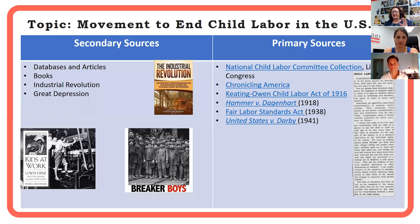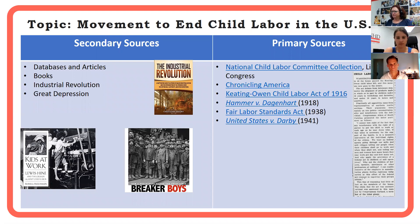I usually start with secondary sources — I might get into some databases through my local library, read articles, and pick up some books, because books matter. I'd want to know about the Industrial Revolution and the Great Depression. I came across a book by Russell Friedman about the photography of Lewis Hine, and once I have my secondary grounding, I'd like to do some primary source research. I would look at the National Child Labor Committee collection — the collection of Lewis Hine photographs at the Library of Congress — and dig into Chronicling America to see what newspapers were saying.